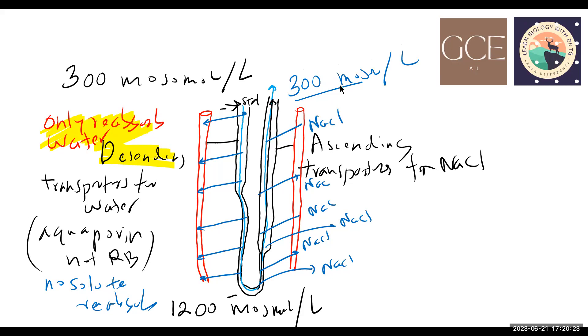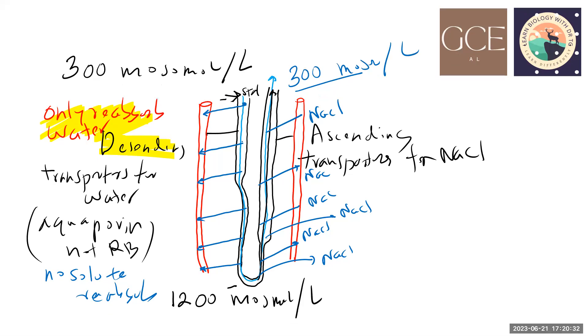This is important especially for certain animals. For example, the kangaroo rat in the desert area has a very long loop of Henle and can reabsorb a large amount of water to conserve it.